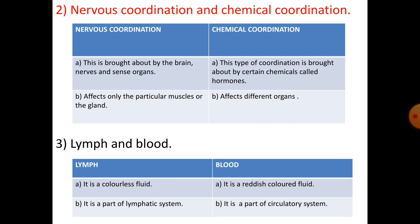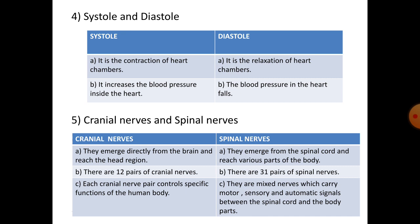Number three: lymph and blood. Under lymph: it is a colorless fluid and is part of the lymphatic system. Under blood: it is a reddish colored fluid and is part of the circulatory system.